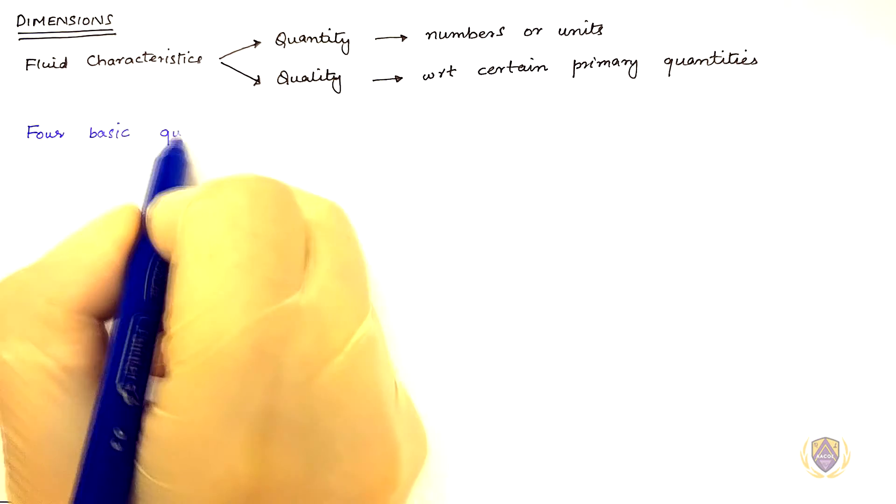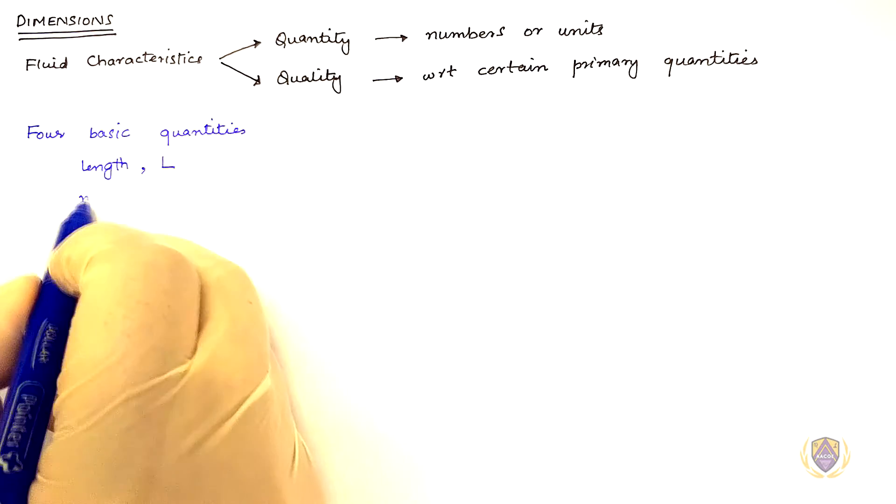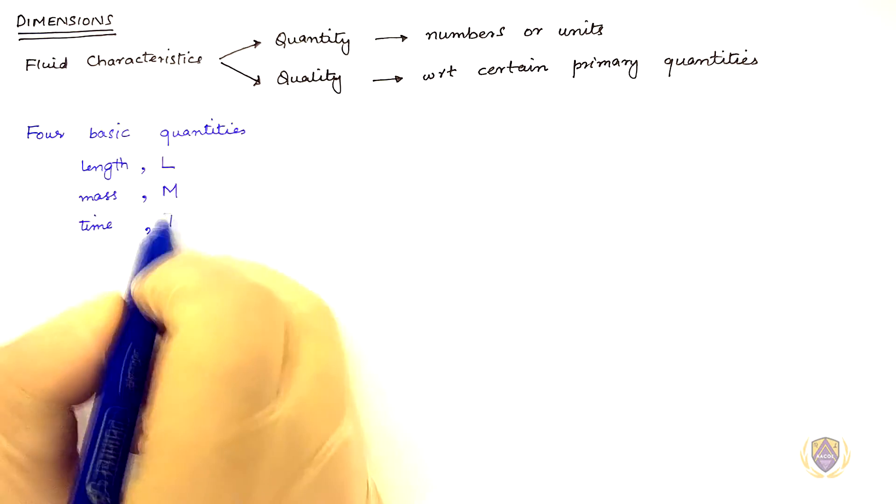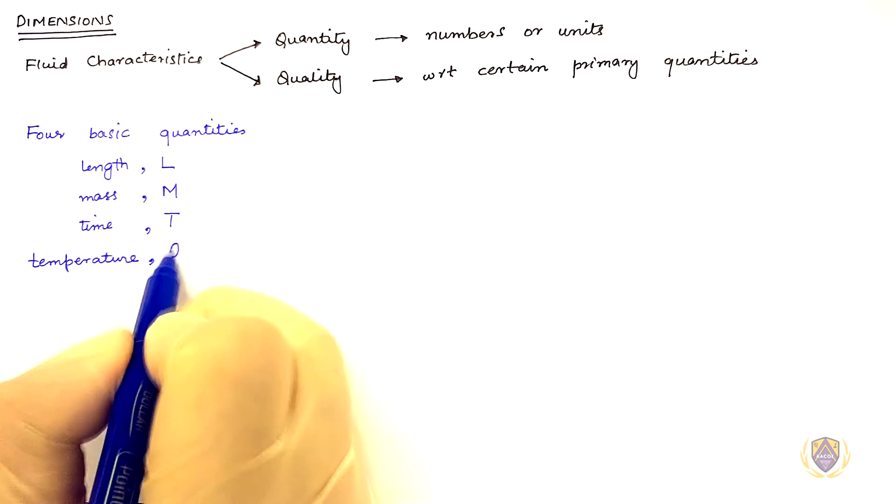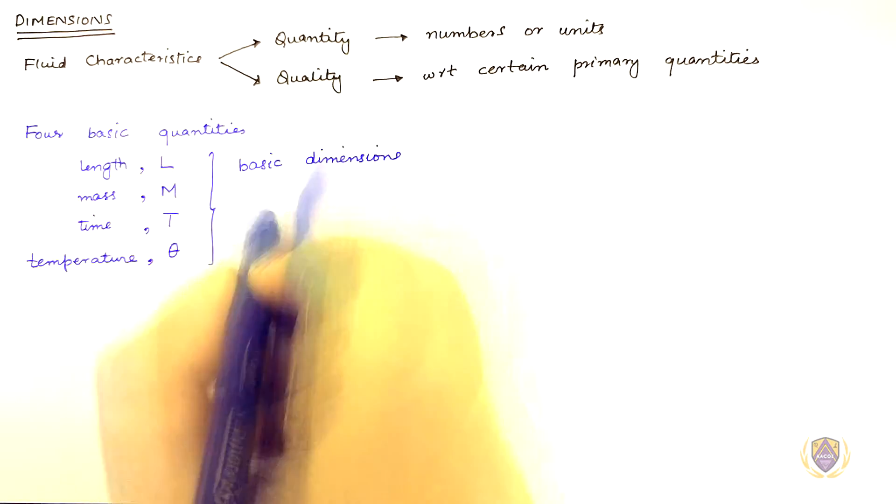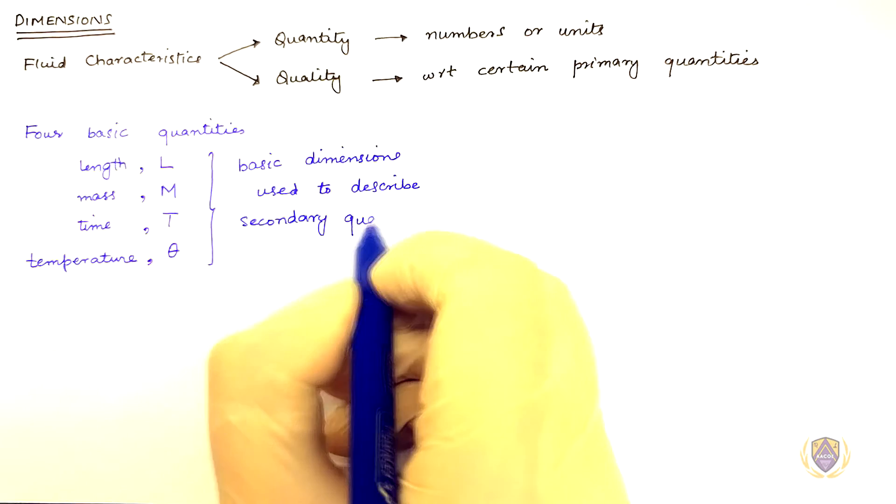There are four basic quantities: Length L, Mass M, Time T, Temperature Theta. These are basic dimensions used to describe secondary quantities.